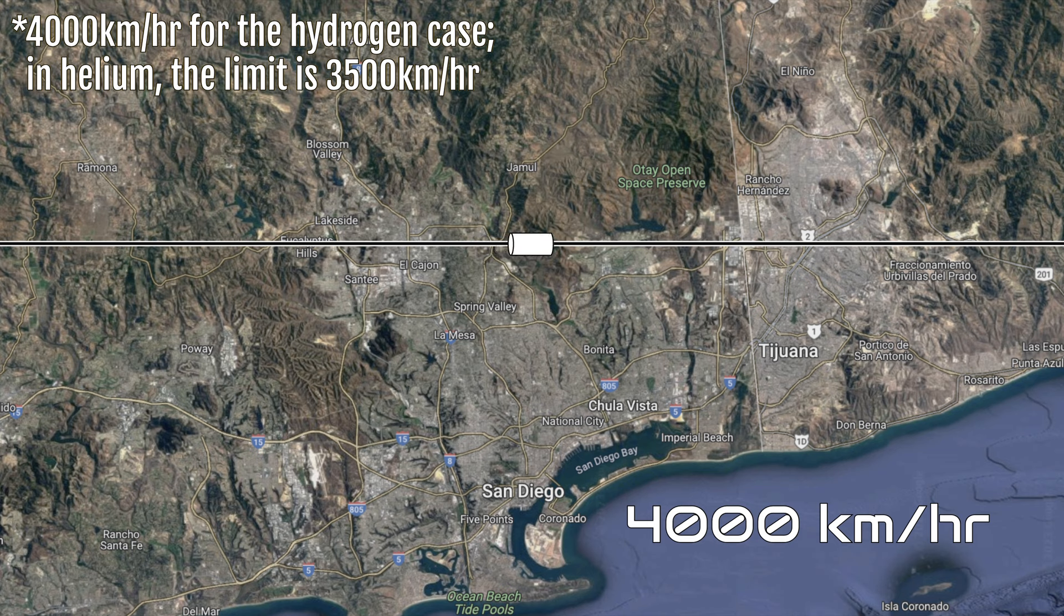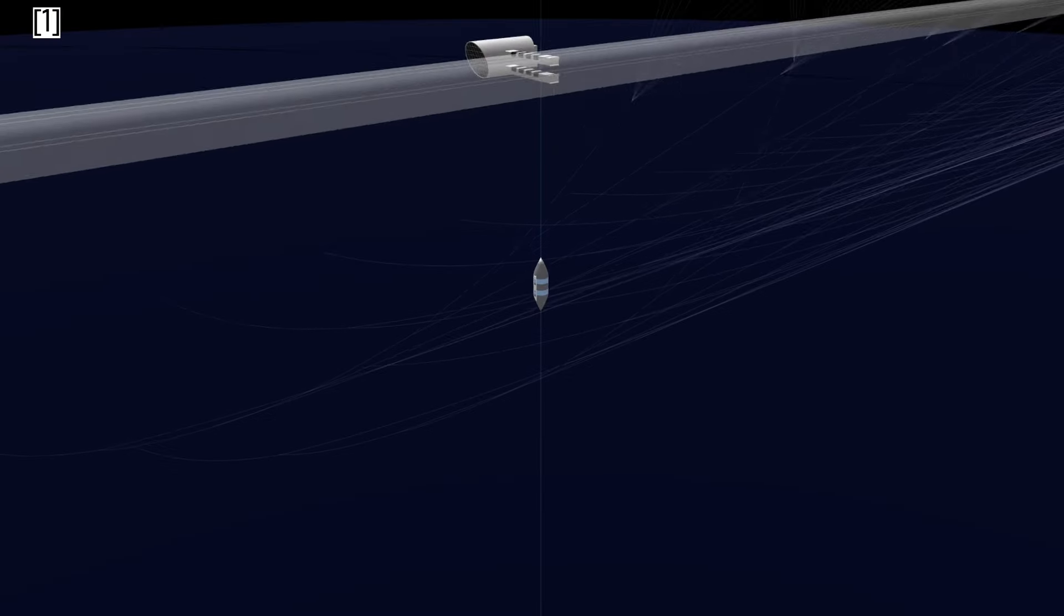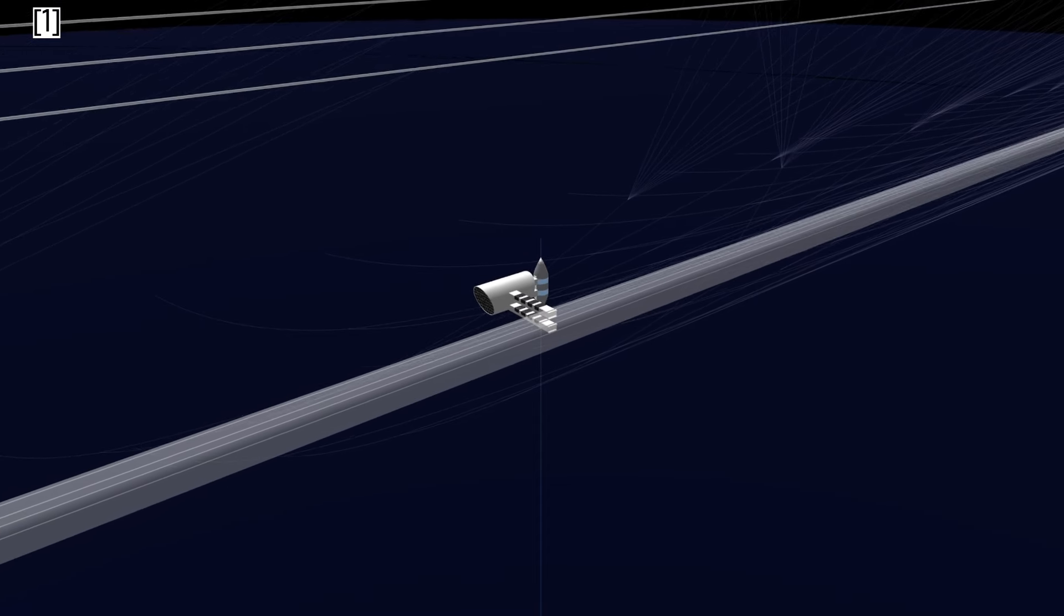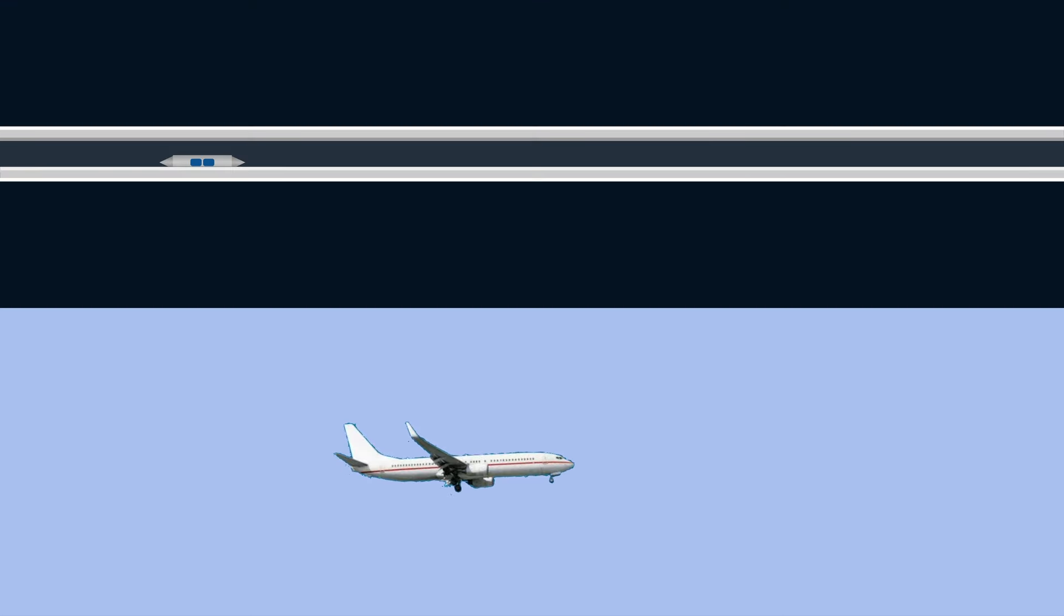At this speed, a trip from New York to Los Angeles would take about an hour. Of course, trips would take a little longer than this, because getting up to and down from the ring would also take about 15 minutes each way. However, the end result is a transportation system much faster than passenger planes and much cheaper too.